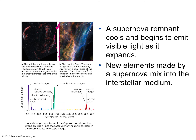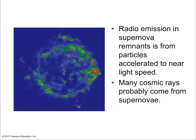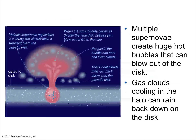A supernova remnant cools and begins to emit visible light as it expands. At first its emission is in x-rays because it's so hot, and also radio waves from very fast-moving charged particles. New elements made by a supernova mix with the interstellar medium — largely atomic hydrogen but with trace amounts of heavy elements, especially from very high mass stars. Multiple supernovas can create huge hot bubbles that blow out of the disk, exchanging matter in and out of the galaxy; gas clouds that cool in the halo can then rain back down onto the disk.